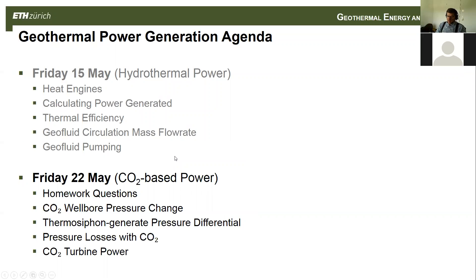For today's lecture, we already covered the homework questions. We're going to look at what happens when you flow CO2 in a wellbore instead of water and how that changes. CO2 has this interesting thing called a thermosiphon-generated pressure differential, which is pretty cool. We'll look at how our pressure loss curves change when we use CO2 and how we can calculate the turbine power.